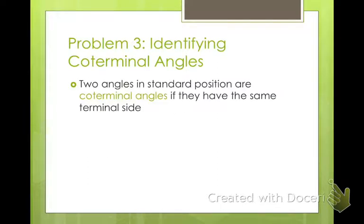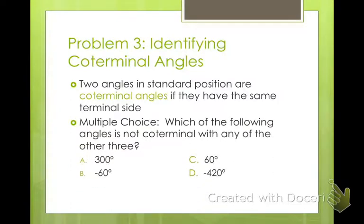Coterminal angles: two angles in standard position are coterminal angles if they have the same terminal side. So if they end at the same place, they are coterminal. Which of the following angles is not coterminal with any of the other three?